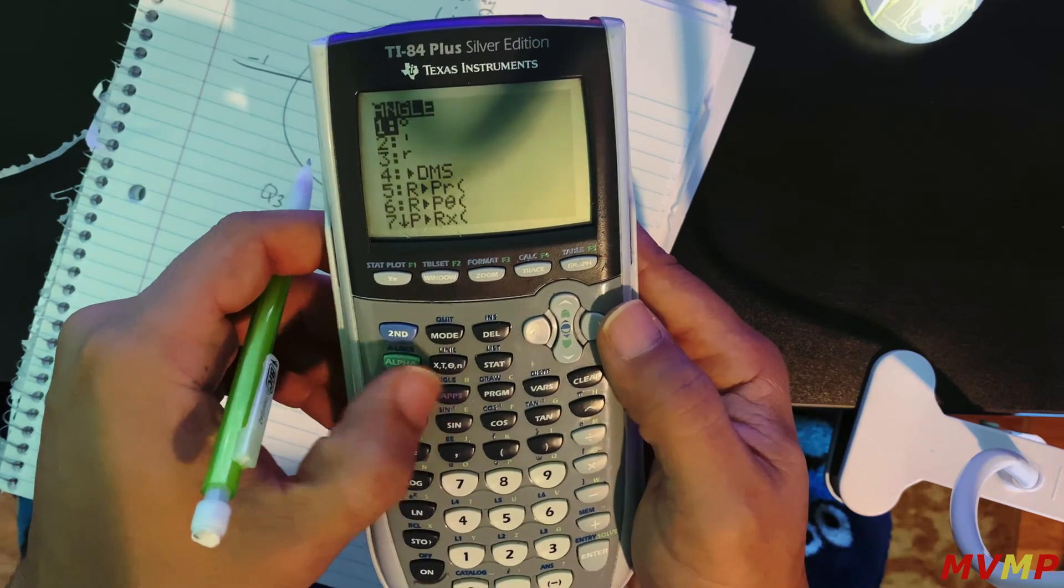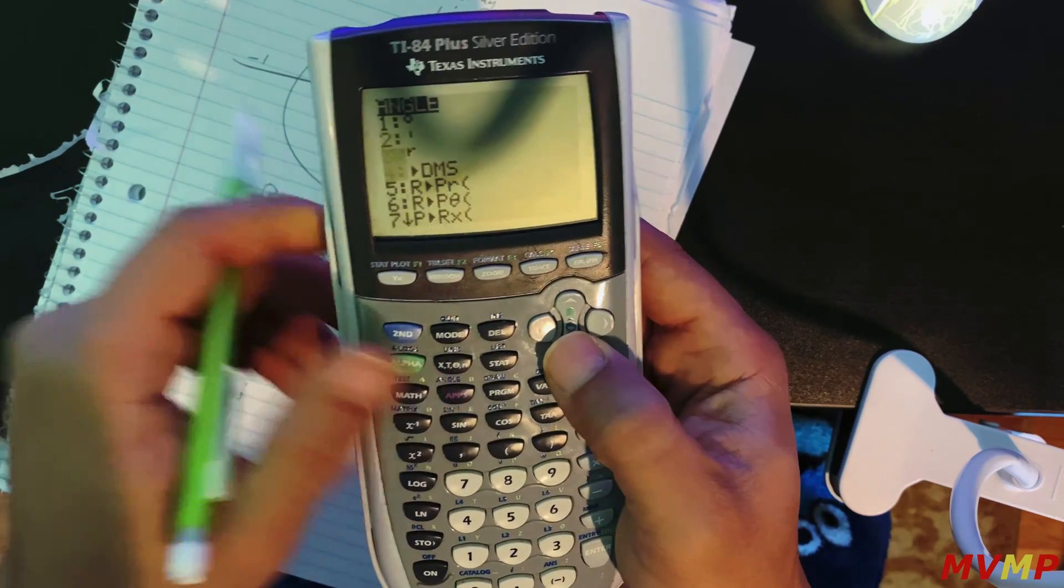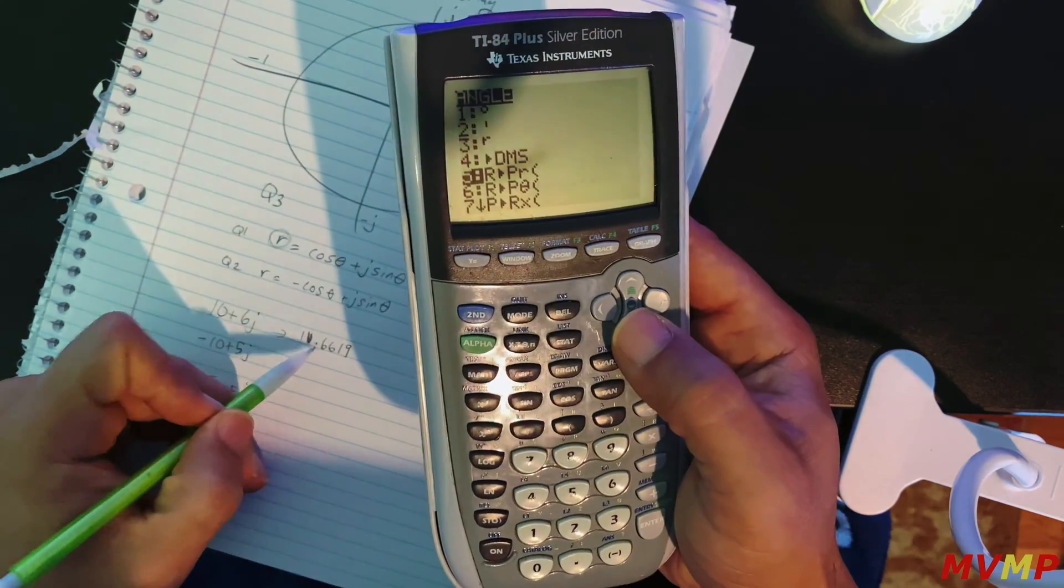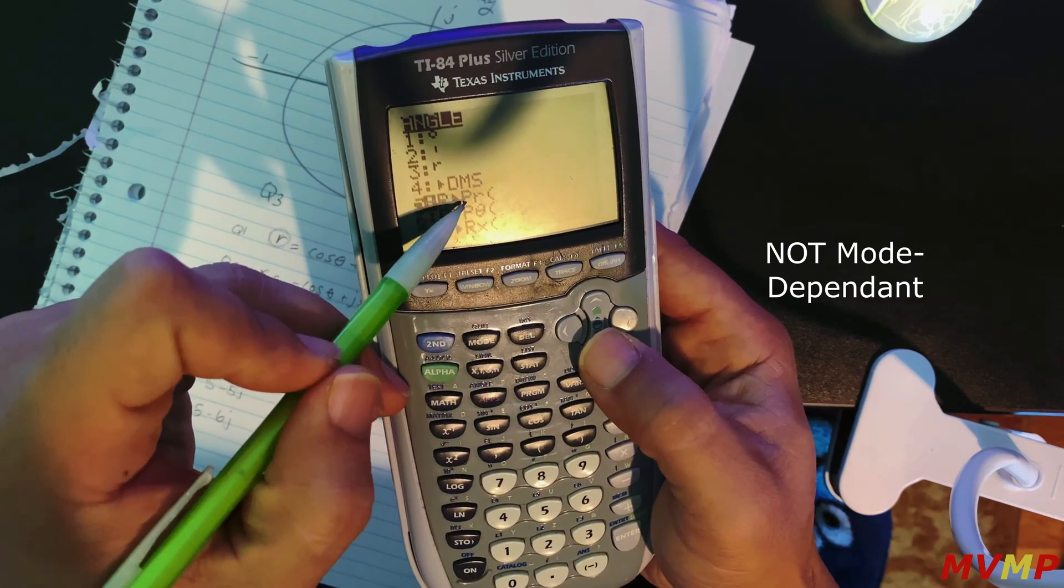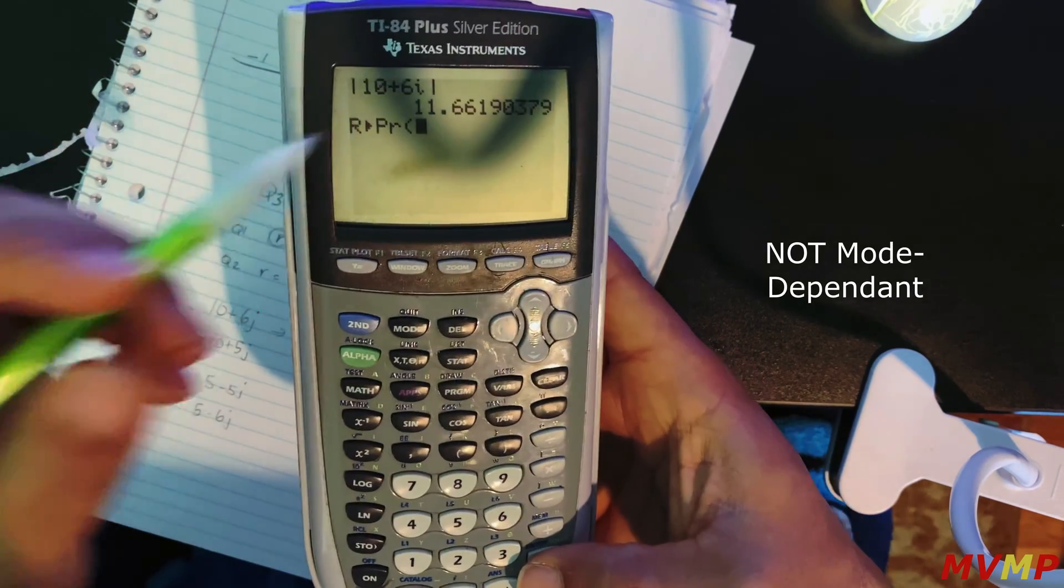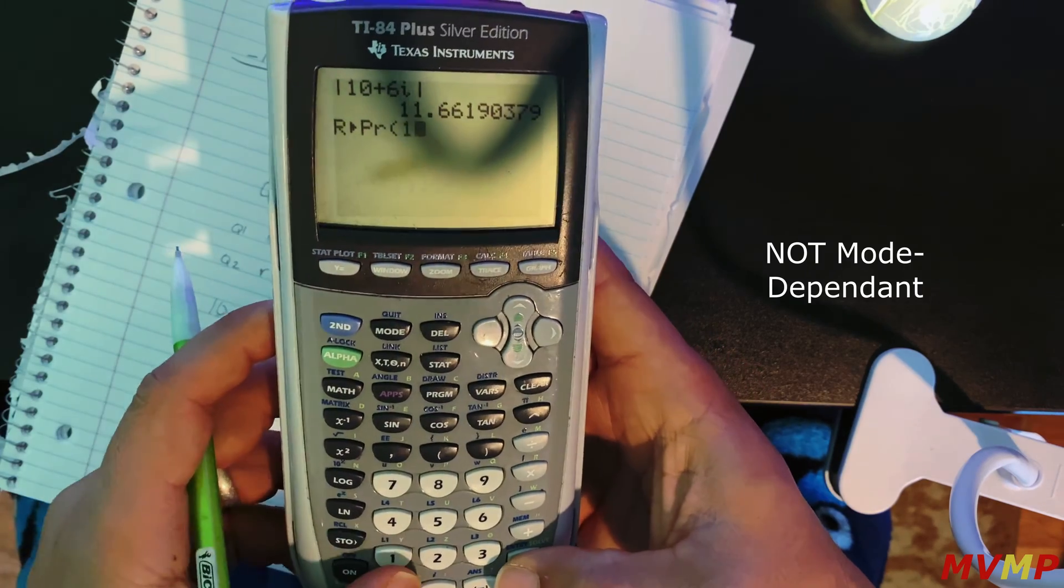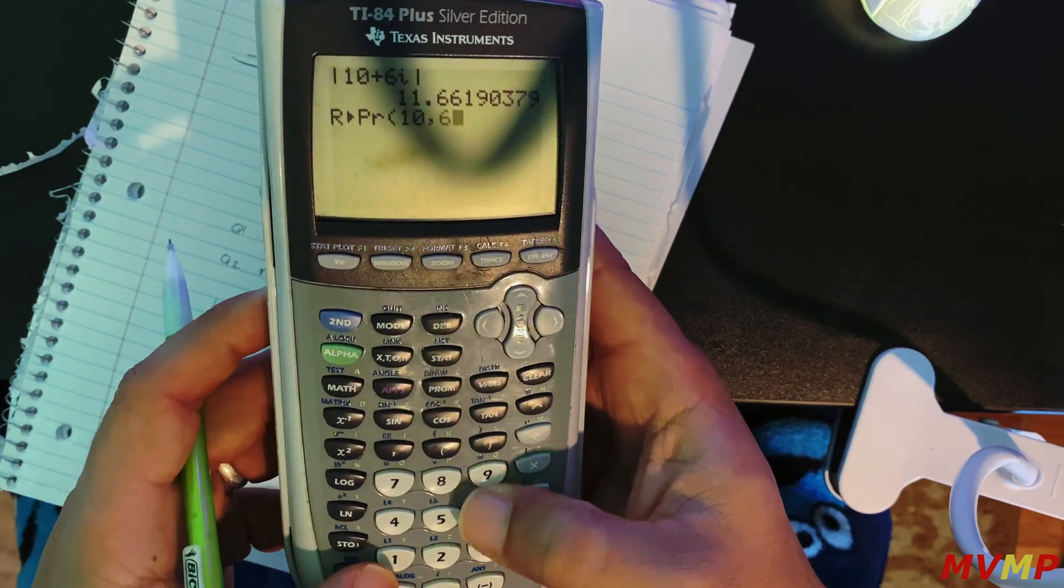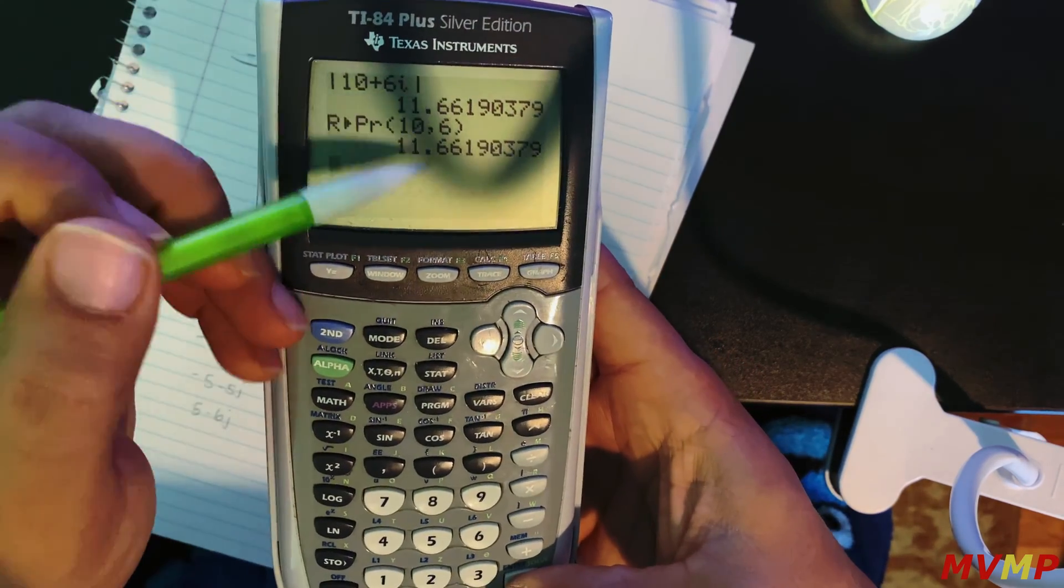Press second apps and here you can get the same one. So we are in rectangular, we're going to polar, and we want to find the r value. So this is another way you can check this by putting a 10 comma six and you get the same number.